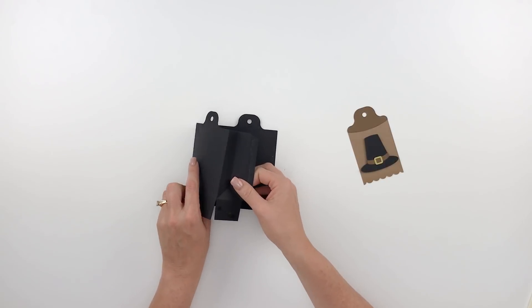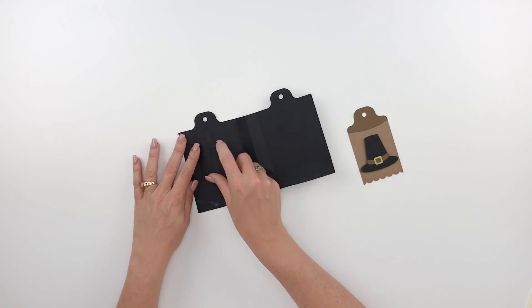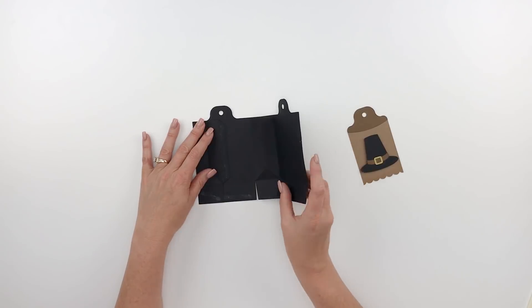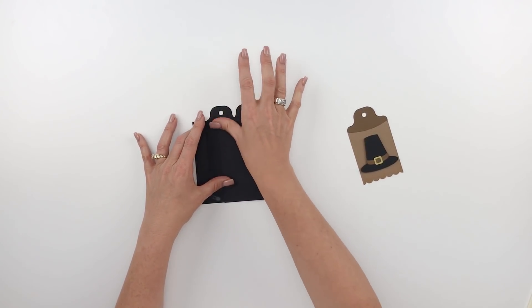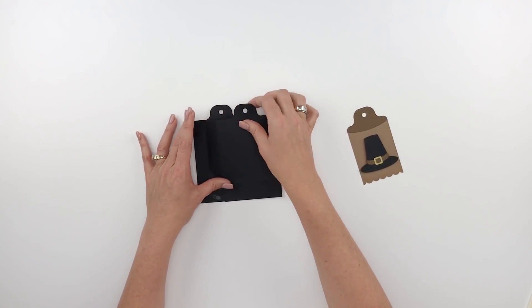Go ahead and put some adhesive on it and put it down on the table, and then just fold that tag bag side over and glue that down.